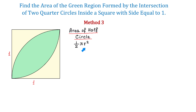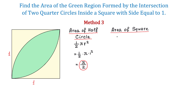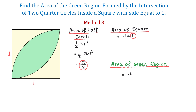The radius is 1. Replacing it, we get 1/2 times π times 1 squared, which equals π over 2. The area of the square is 1 times 1, which equals 1. To find the area of the green region, we subtract 1 from π over 2, so the area of the green region is π over 2 minus 1.